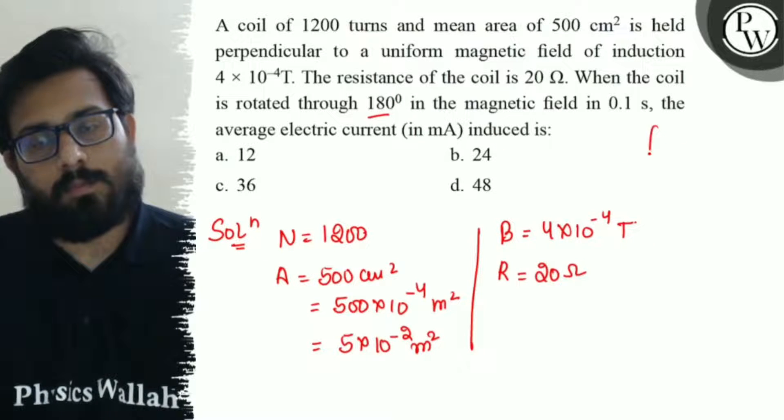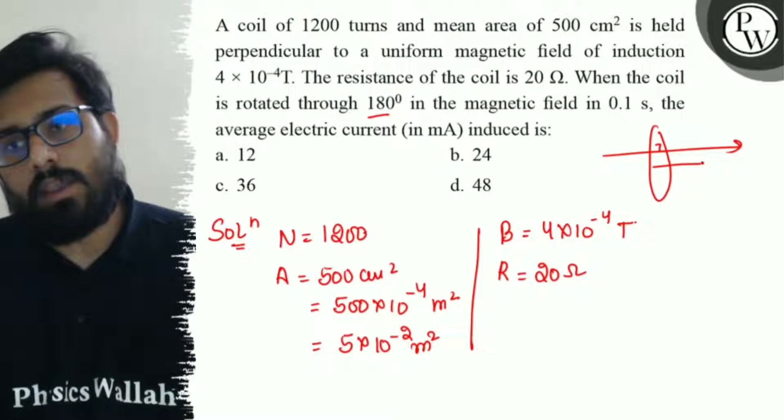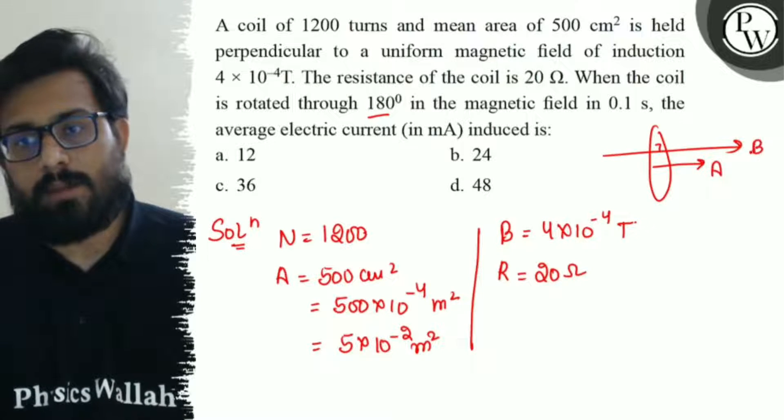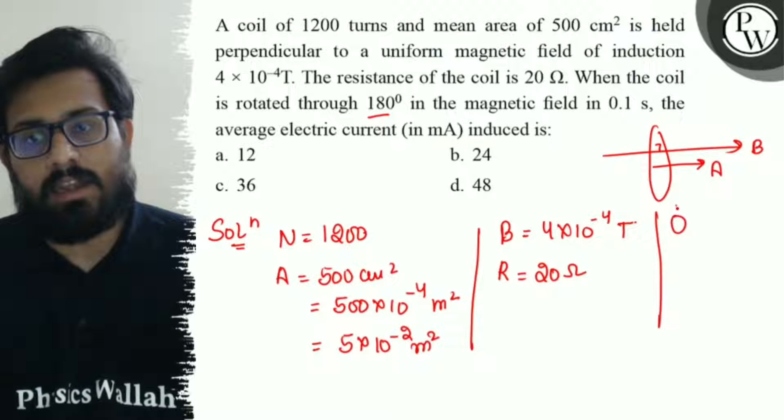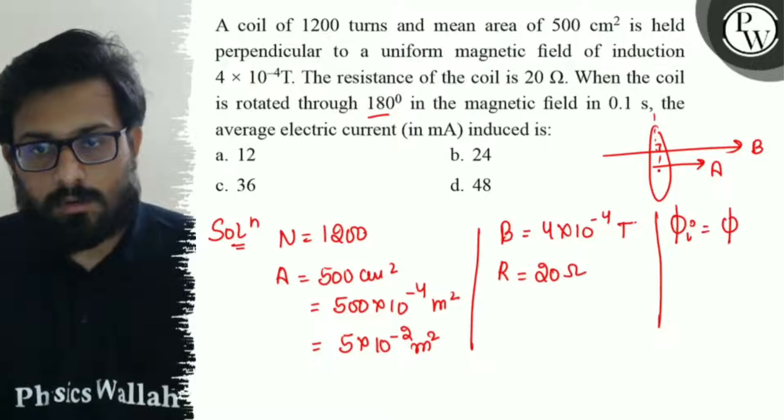Suppose initially the coil is like this, and the magnetic field is perpendicular to the coil. So area vector and magnetic field are in the same direction. We have the initial flux as Φ. Then suppose the coil is rotated...